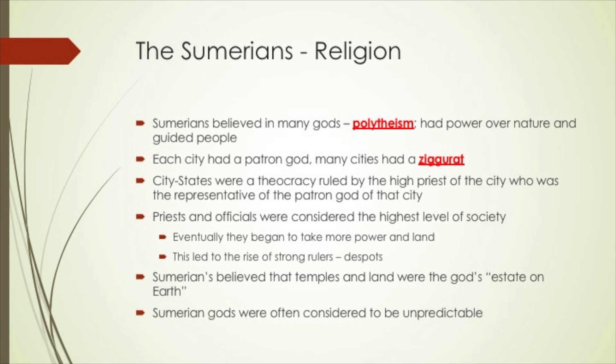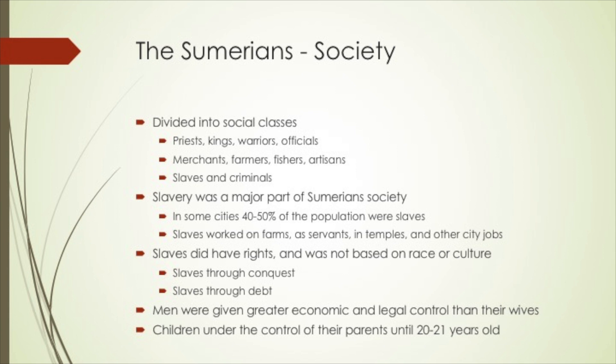Priests and officials were thought to be the highest level of society. However, eventually these priests began to take more power and more land, and this led to the rise of strong rulers, also known as despots. The Sumerians believed that the temples and lands were the gods' estate on earth, and that the gods actually lived in the temples and ziggurats built for them. Oftentimes, Sumerian gods were considered to be unpredictable — the unpredictable nature of the flooding of the Tigris and Euphrates rivers can be explained by this belief.